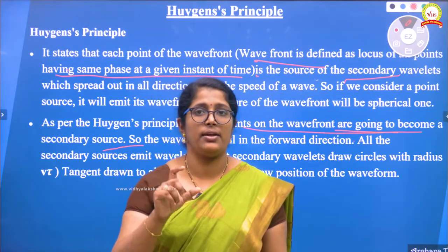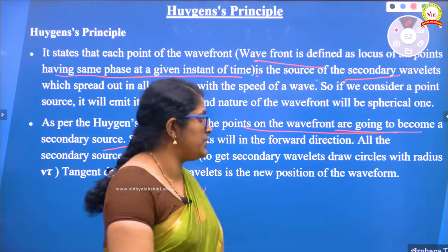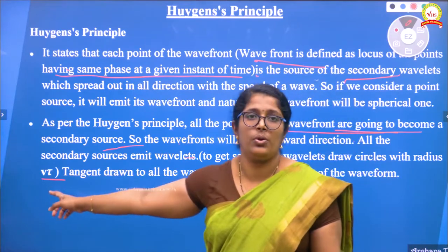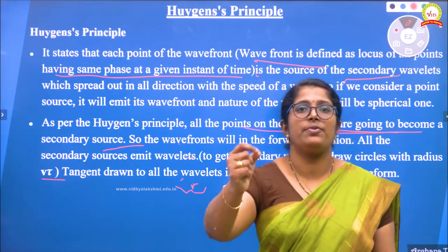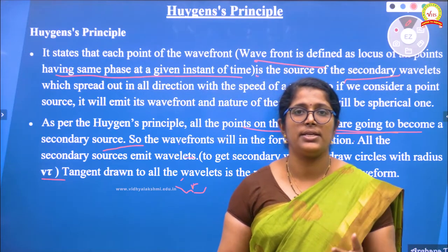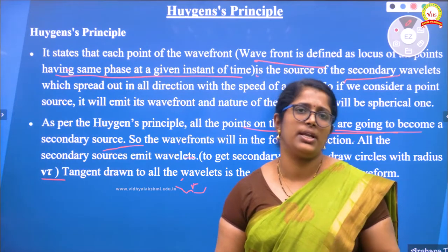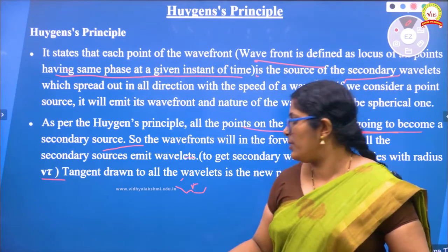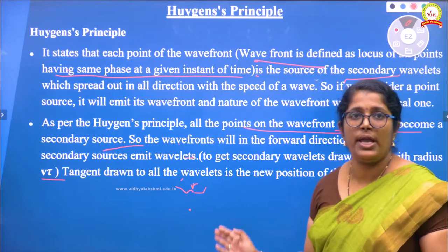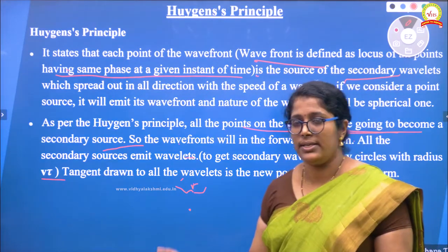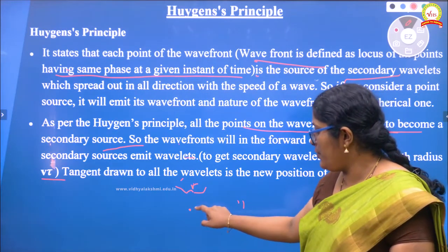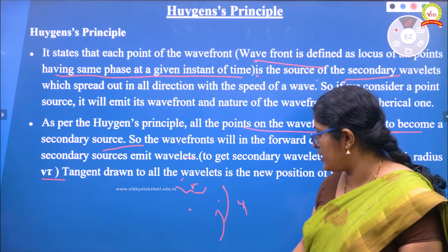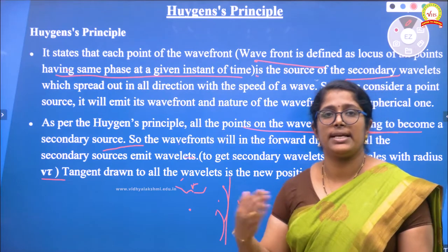How to get the secondary wavelengths is very easy — draw circles with radius equal to v multiplied by tau, where v is the velocity of the wave and tau is the time with which that wave is propagating. Suppose we want to find the secondary wavelengths at 1 second or 2 seconds — you multiply velocity by that time to get the radius. Suppose this is a point source and you want to form secondary wavelengths — you draw a circle like this, again one more circle like this, and this boundary will give you the secondary wavelengths.